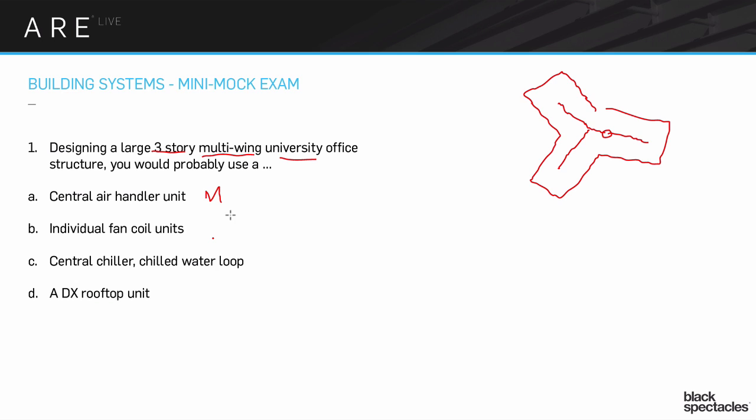Let's look at B, individual fan coil units. So the fact that it's individual offices, you could imagine a building filled with offices and they have lots of small fan coil units in each of the different ones. Similarly to if it was a building filled with classrooms, you'd have lots of these fan coil units in each classroom, spreading through the whole building. That seems kind of unlikely, but possible. So I'm going to call that one another maybe.